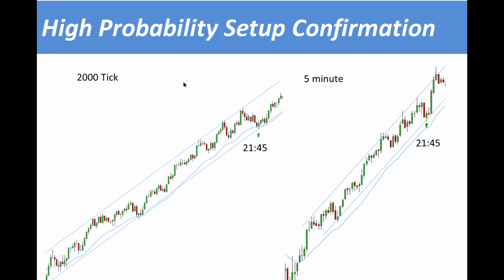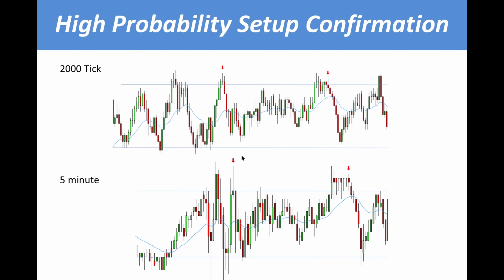On another example — the same high probability setup confirmation. On the 2000 tick chart we have a strong uptrend, price is correcting and working lower. We have a break and new low of the correction, which implies the correction is over, and I have a nice second entry long off two key entry points. I take a glance at the five minute chart and I see a first entry long pullback, then second entry long in an uptrend spike and channel pattern off the trend line. The pattern is too perfect.